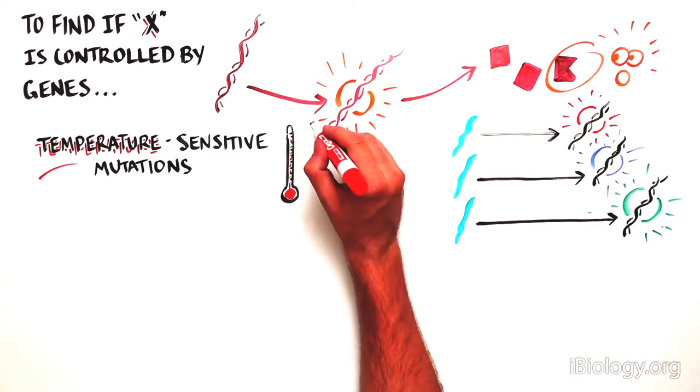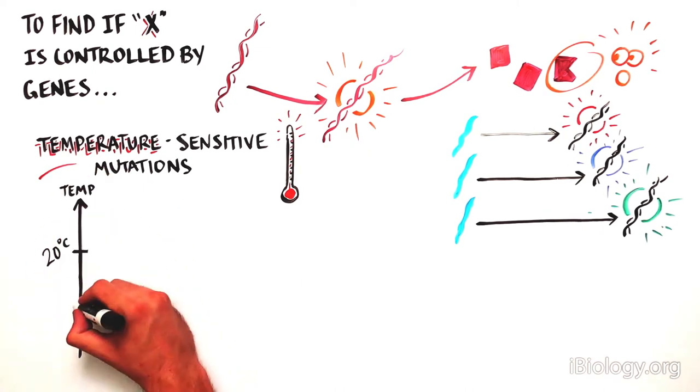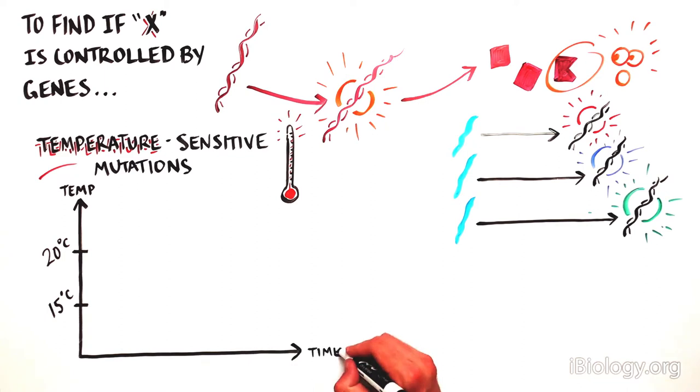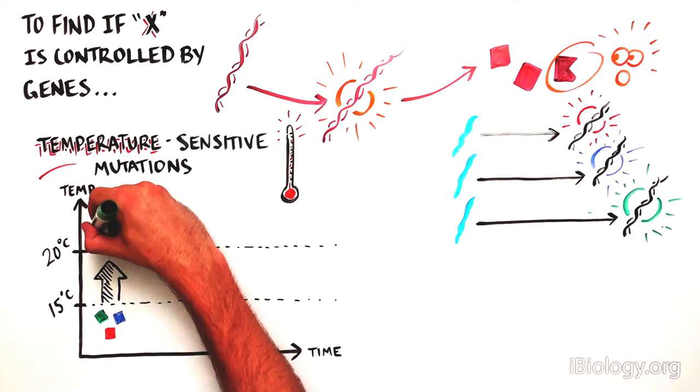While the worm's DNA always contains the mutation, the protein produced from that DNA behaves normally at lower temperatures, but it does not function correctly when the worms are at higher temperatures. So what the scientists did was grow their worms at a normal temperature of 15 degrees Celsius, so the mutations would not take effect. And then, after the worms progressed through their development, the scientists shifted the worms to a higher temperature of 20 degrees Celsius.